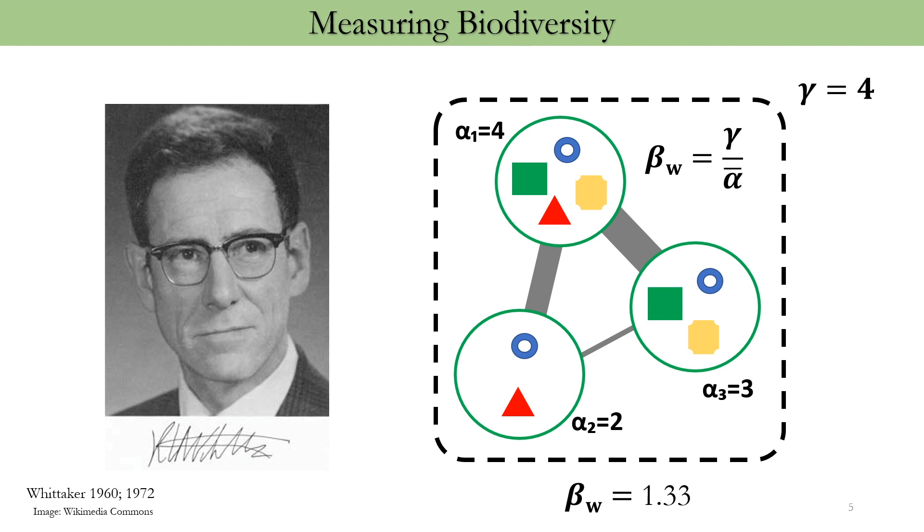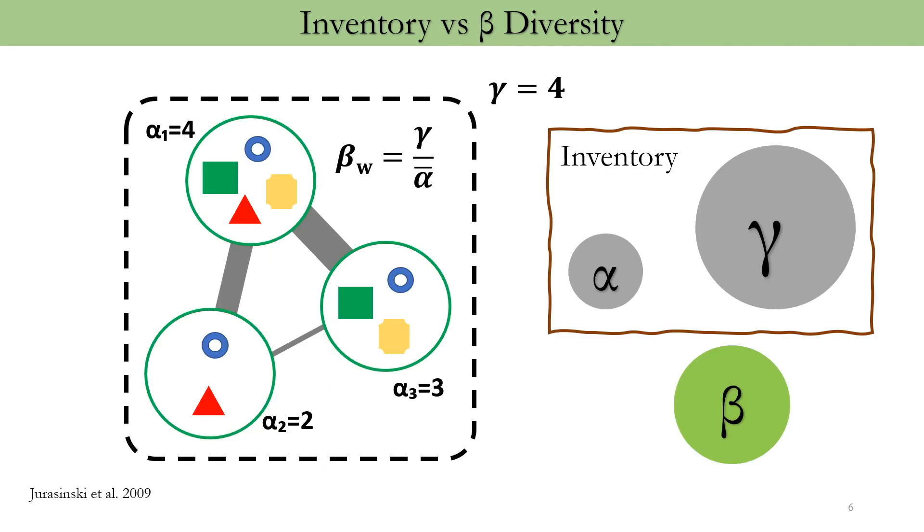However, after this explanation, I think it is very clear for all of us that all of us realize that alpha and gamma are more or less same. They are species richness and they differ only in the extent at which they are measured. And hence, they are called as inventory diversity indices in the literature.